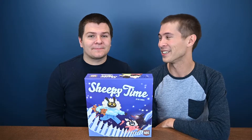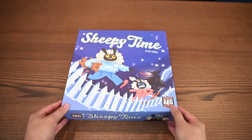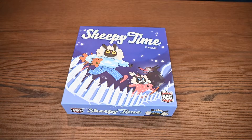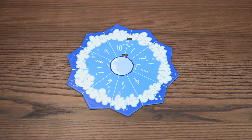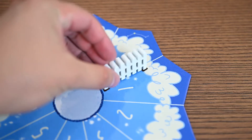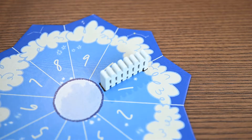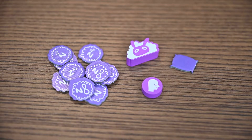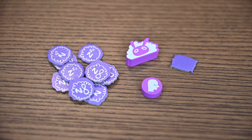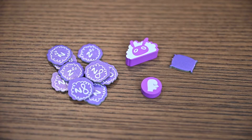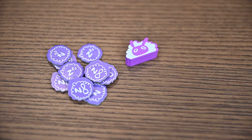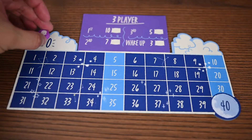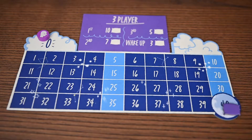Alright, let's jump right into it and take a quick look at how to play this game. You'll begin by setting up. You'll place the game board at the center of the table with this cute little fence between the one and the ten. Then each player will get their pieces: a sheep, a wink token, a pillow, and their Z's. Now they'll place their wink token and their pillow onto the scoring track, with the wink going on 0 and the pillow going on 40.